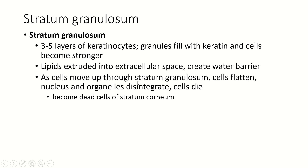As the cells move up through this layer, the stratum granulosum, they are going to start to die off. They fill up with keratin and then actually get rid of other parts of the cytoplasm — like the other organelles. They flatten out, the nucleus and other organelles disintegrate, the cell dies. So when they reach the stratum corneum, the top layer, they're actually dead, and all they are is a little shape of keratin.